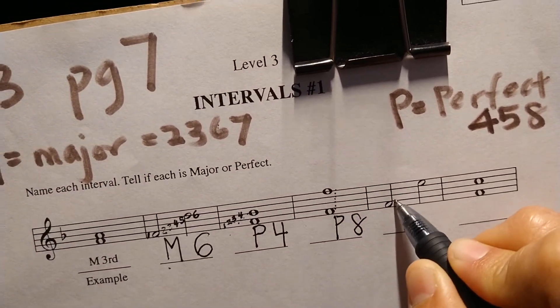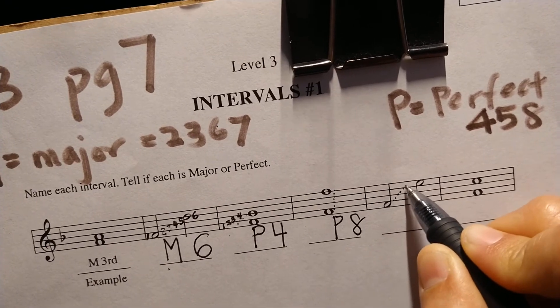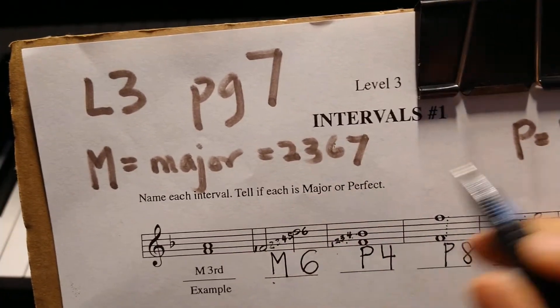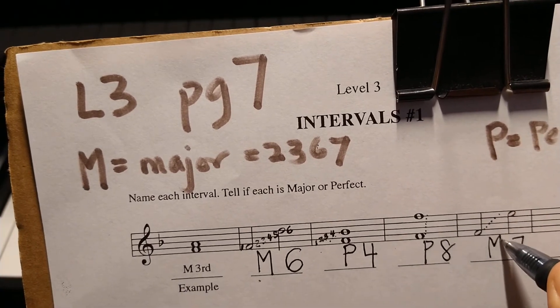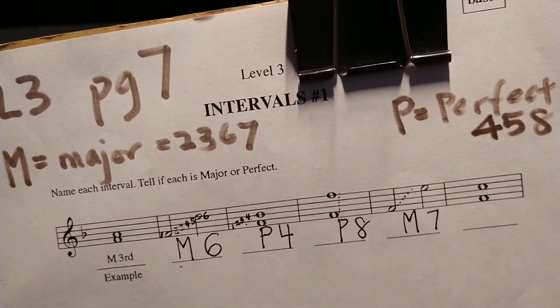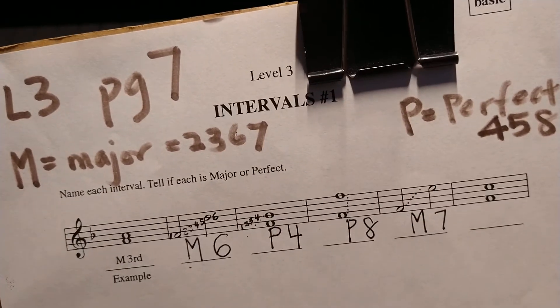And count this one. 1, 2, 3, 4, 5, 6, 7. 7 is a major 7. So you write a big M. Make sure your M is pointy.